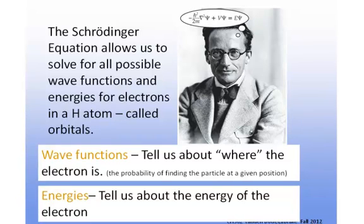The solutions contain two parts. Wave functions, which tell us about where the electron is. More specifically, the probability of finding the particle, in this case which is an electron, at any given position. And the energies tell us about the energy of the electron.